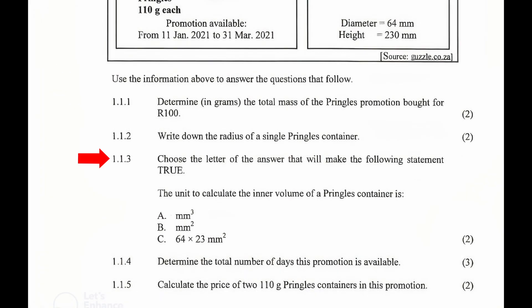1.1.3: Choose the letter of the answer that will make the following statement true. The unit to calculate the inner volume of a Pringles container is: A) cubic millimeters, B) square millimeters, or C) 64 multiplied by 23 square millimeters.